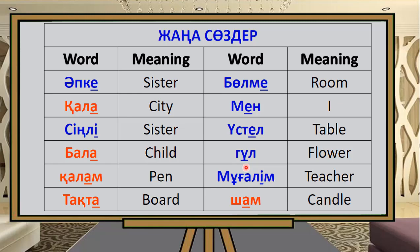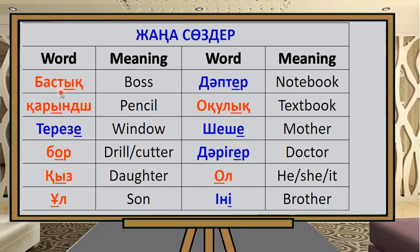Gull means 'flower.' Mughalem means 'teacher.' Shum means 'handle.' Bastak means 'boss.' Karindash means 'pencil.' Teresi means 'window.' The next word means 'board' or 'drill/cutter.'